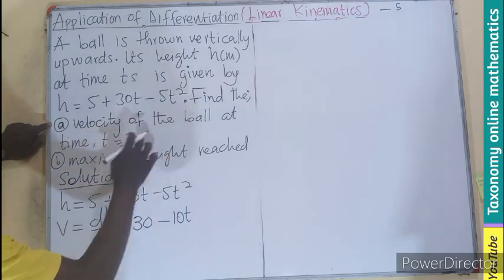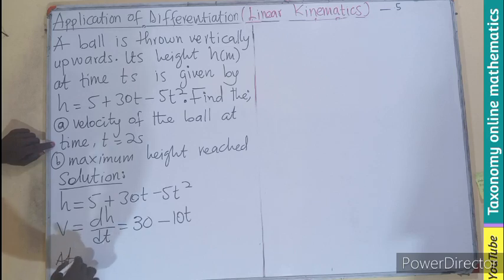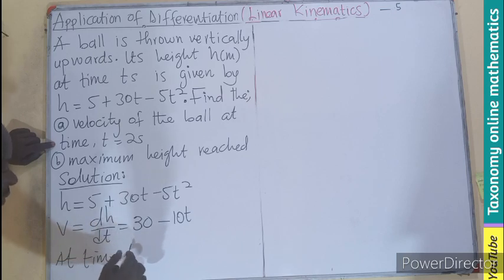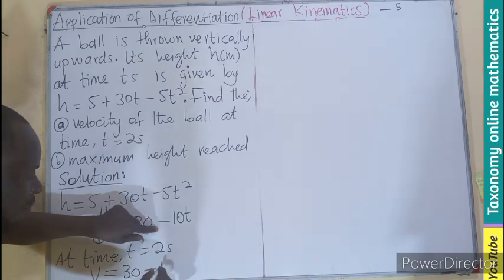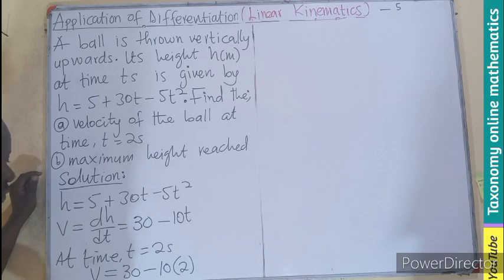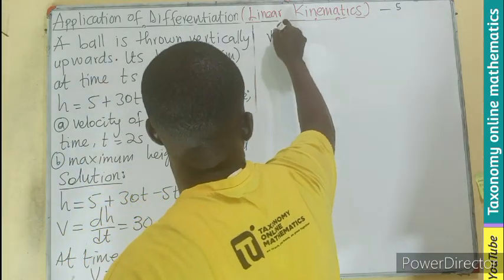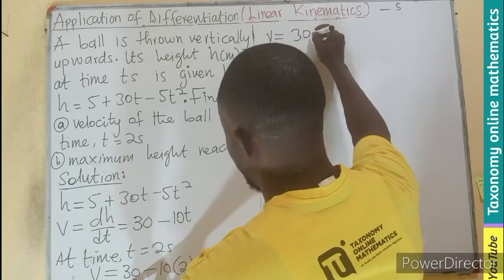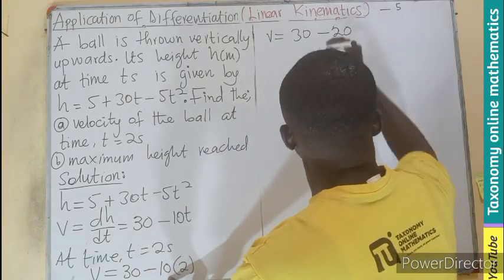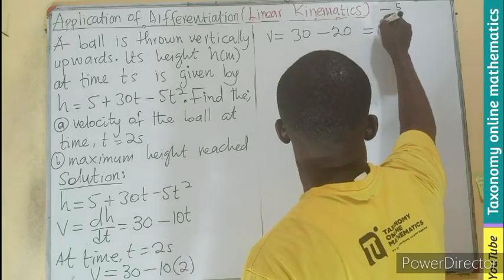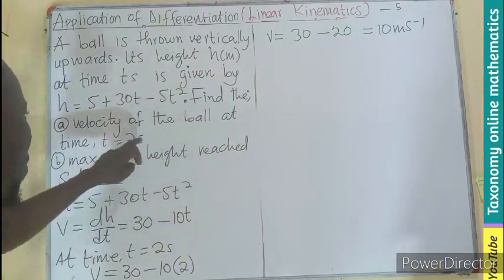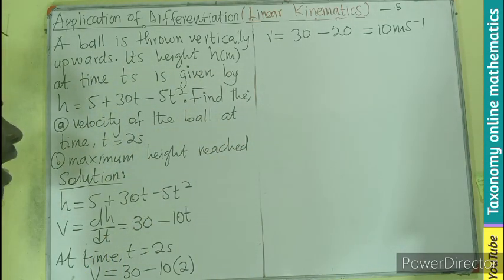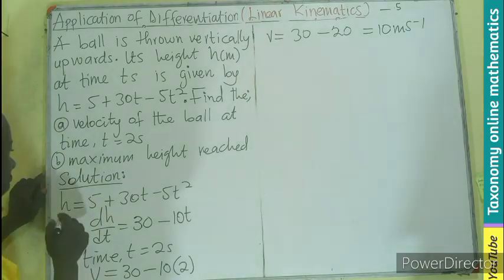We are finding the velocity at time t equals 2 seconds. Substituting into v equals 30 minus 10t, velocity becomes 30 minus 10 times 2, which is 30 minus 20. That gives us 10 meters per second. So the velocity of the ball when the time is 2 seconds will be 10 meters per second. This is part A.